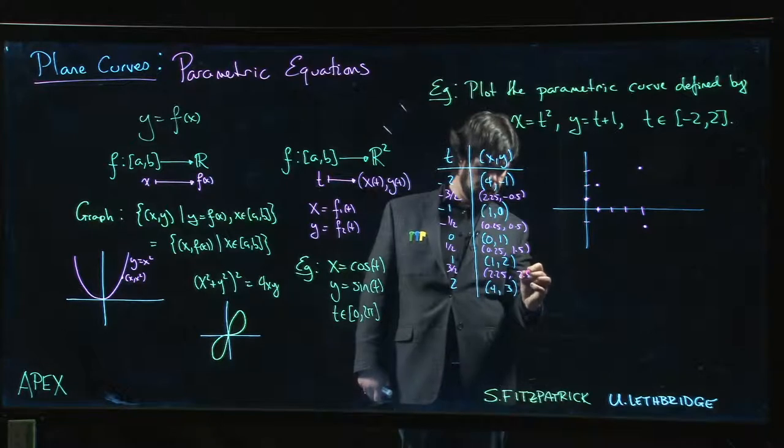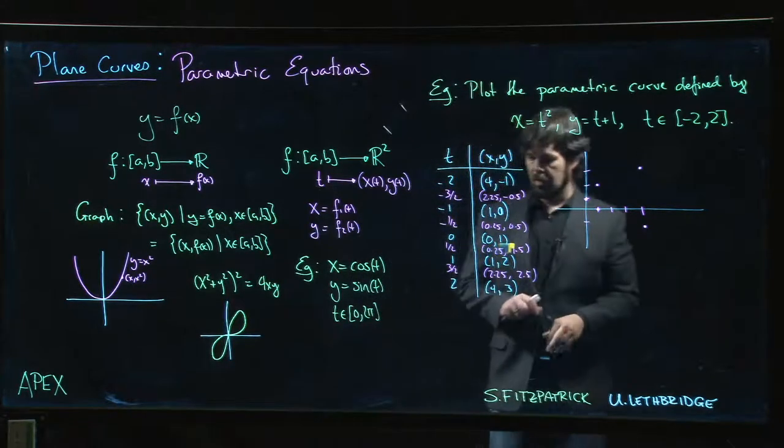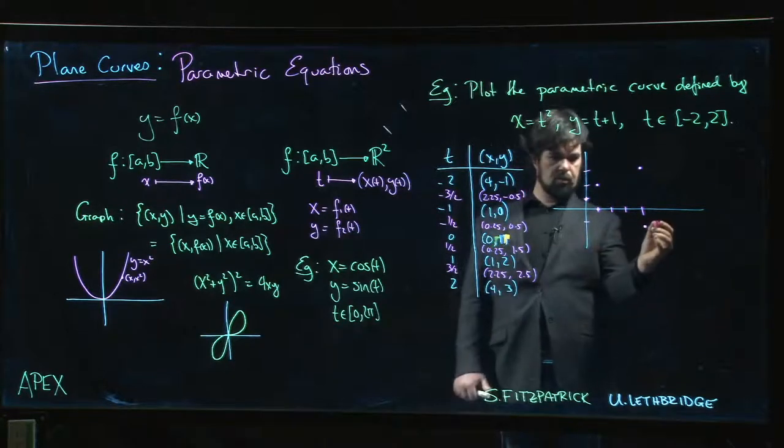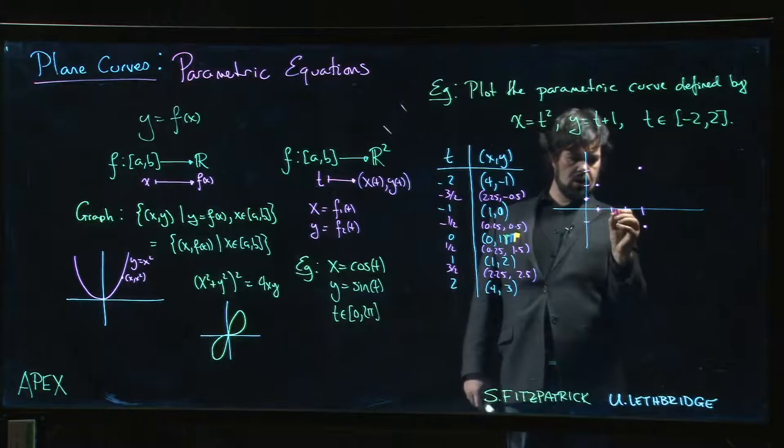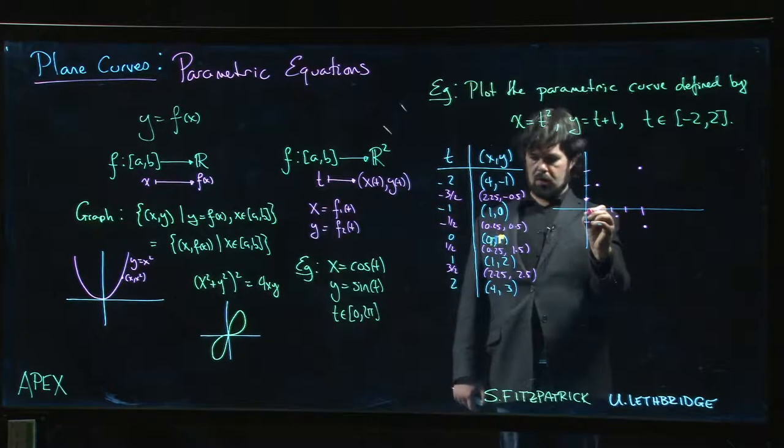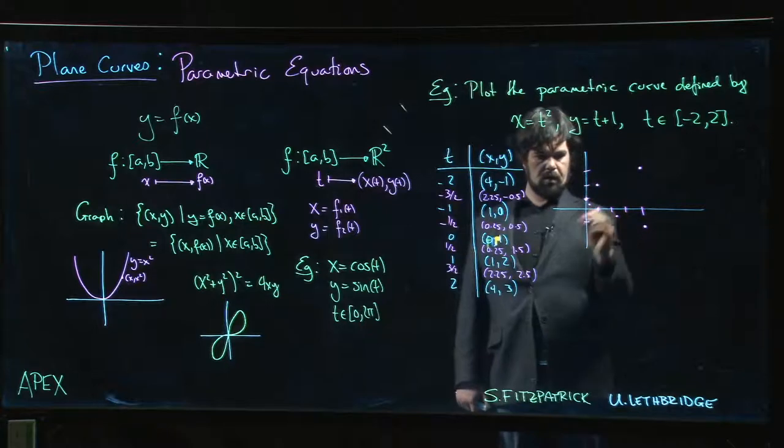And so maybe we try to plot those points as well. This is a pretty crude thing, so we'll do our best. 2 and a quarter, we're about halfway, so we're about there. And then x is a quarter, y is equal to a half, so we're about there.